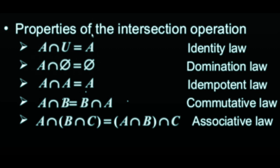Now we are going to study properties of intersection. First is identity law. A intersection U, where U is the universal set, equals A. That is called identity law.